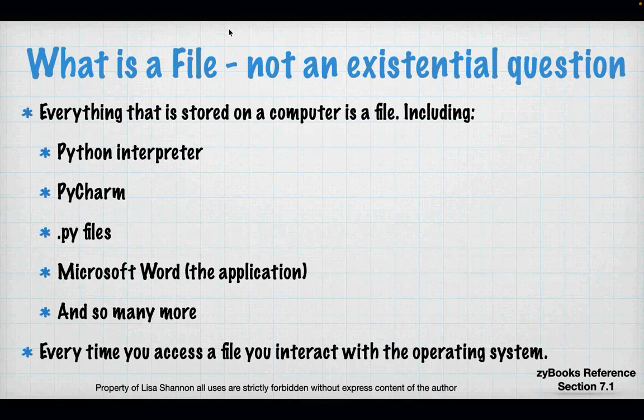So what is a file? As I said before, everything on a computer is a file, including the Python interpreter, PyCharm, .py files, Microsoft Word. Anything that is on your system is in a file — that's how information is stored on any hard drive. Every time you access a file, open a file, run a program, or type an email, you're creating files. We need to know how to use those files so we can interact with the operating system.